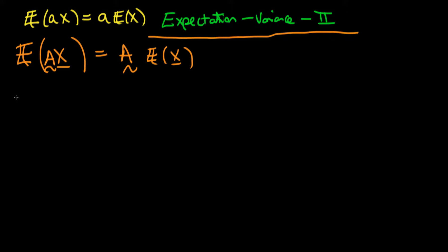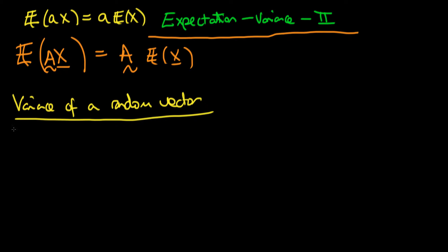Let's now think about what it actually means to take the variance of a random vector. This is slightly different to what we defined for the scalar case. Just reminding ourselves: a random vector x has components x1, x2, through to xn, where each of these components is itself a random variable.